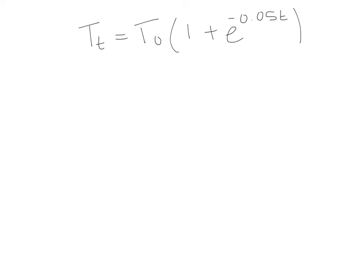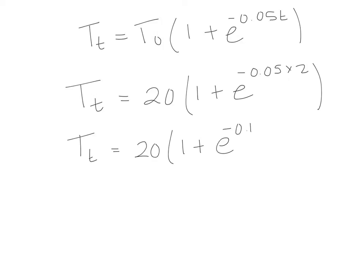Right, and then we want to sub in our values. So we're still trying to find T small t. We said that T0 was 20. And then we're going to have 1 plus e. And our power is going to be minus 0.05 times 2. So we have large T, small t. So that's our temperature we're trying to find. It's going to be 20 times 1 plus e to the minus 0.15.